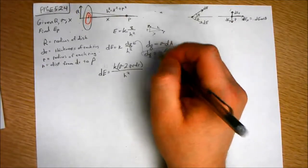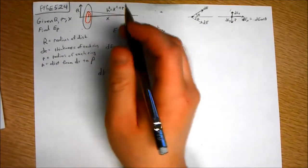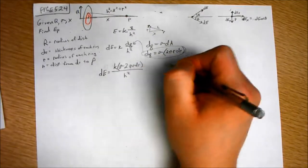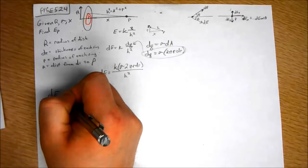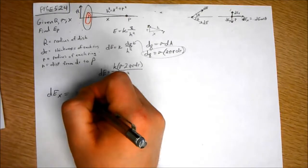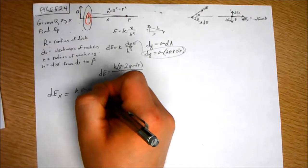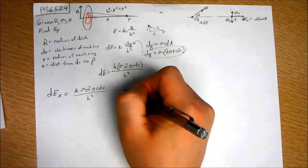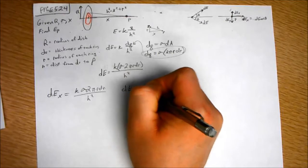DEX equals DE cosine theta. So, DEX equals K sigma 2 pi R dr over H squared, and DEY equals 0.